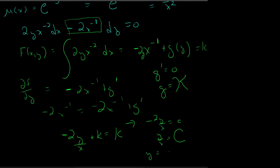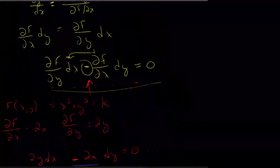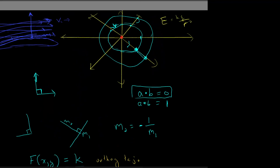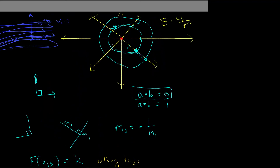y equals C·x is what we were looking to see. We were looking to see that y is a line through the origin — all lines through the origin. And if we go look at what we were trying to find the orthogonal trajectory for, that describes the lines that are orthogonal to circles. That makes perfect sense geometrically.